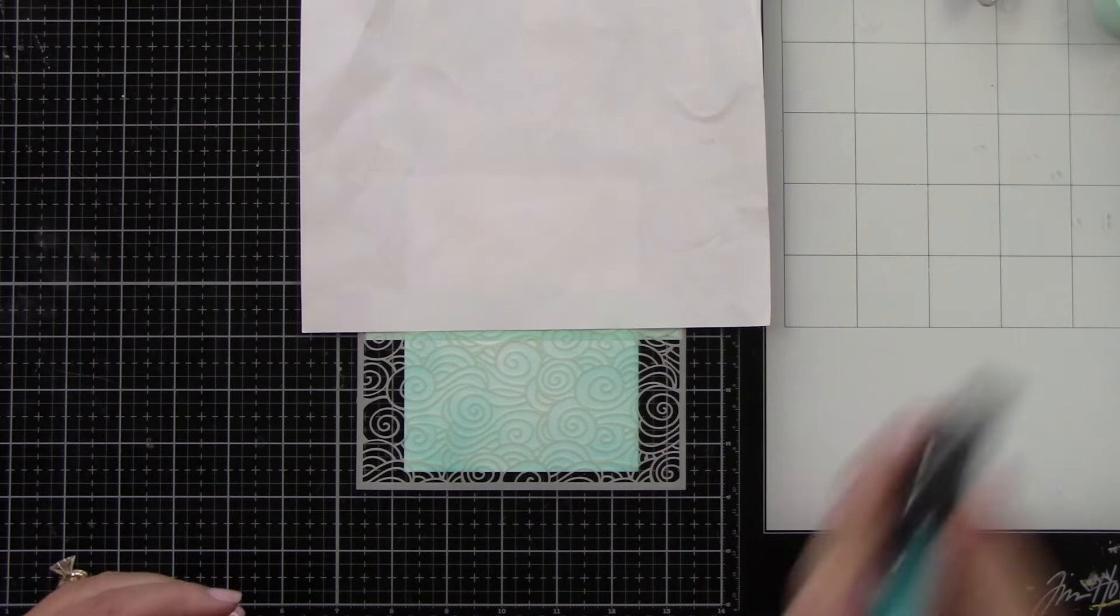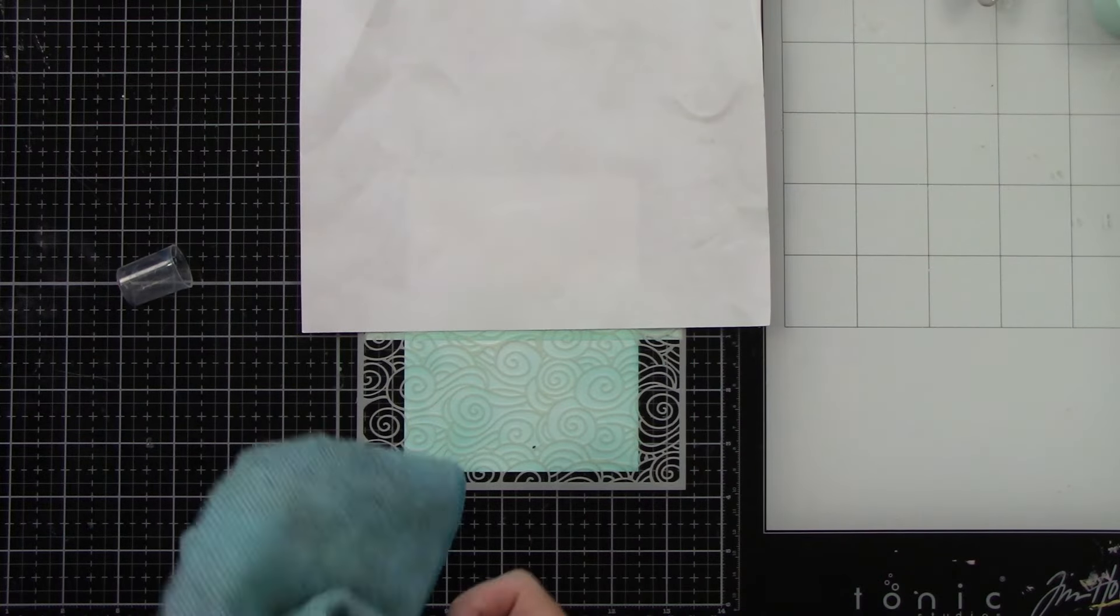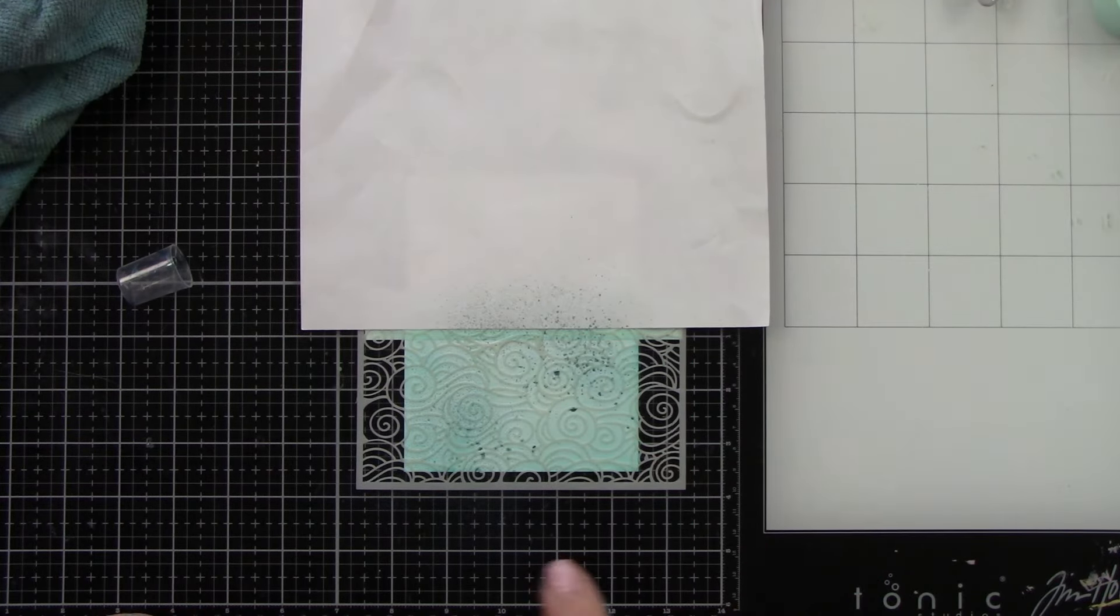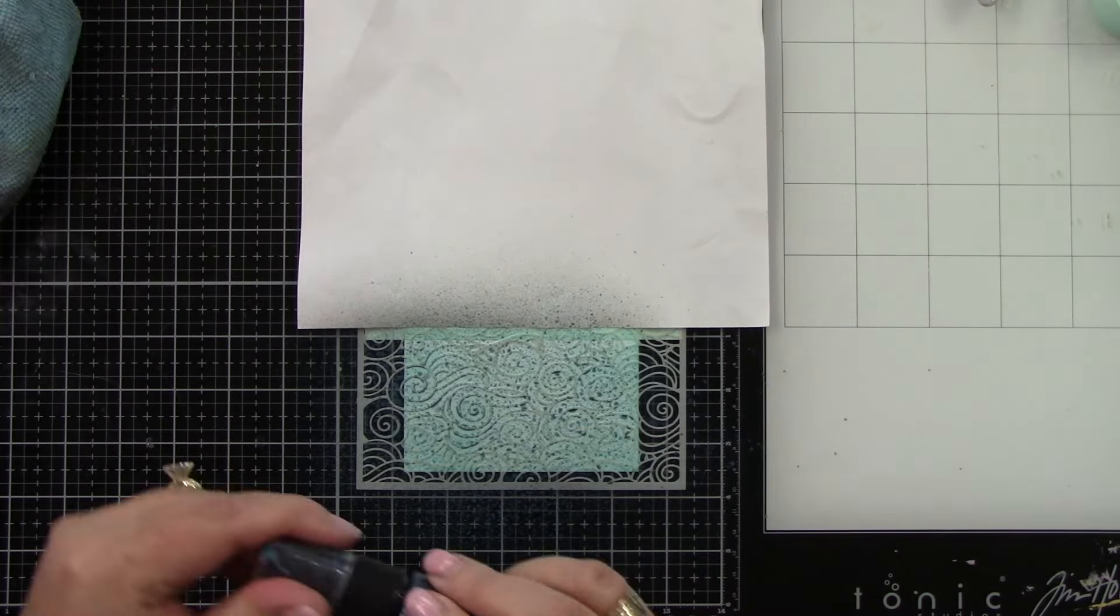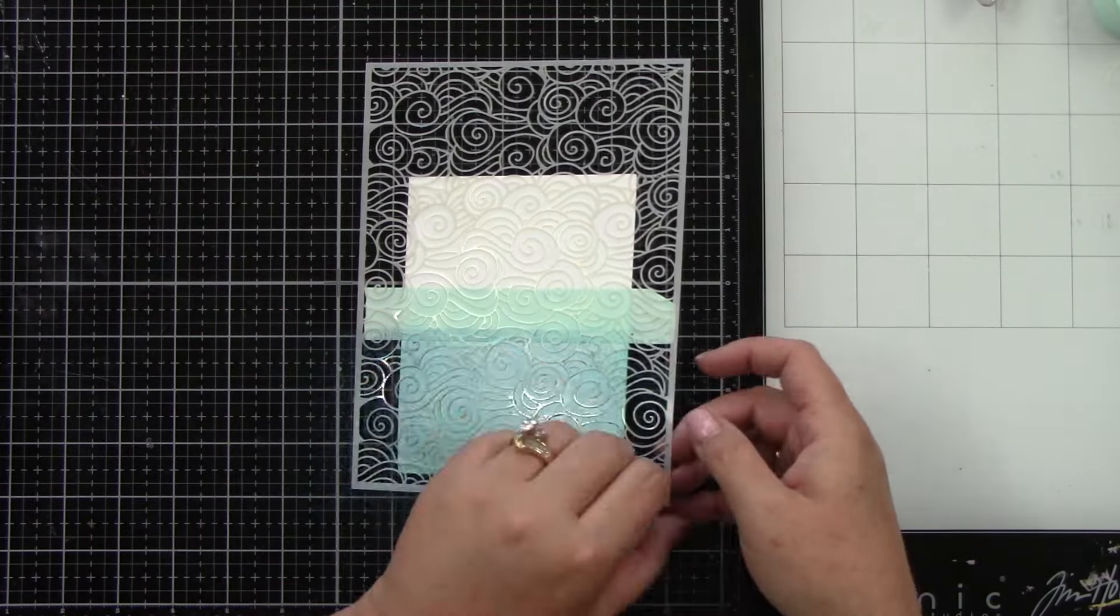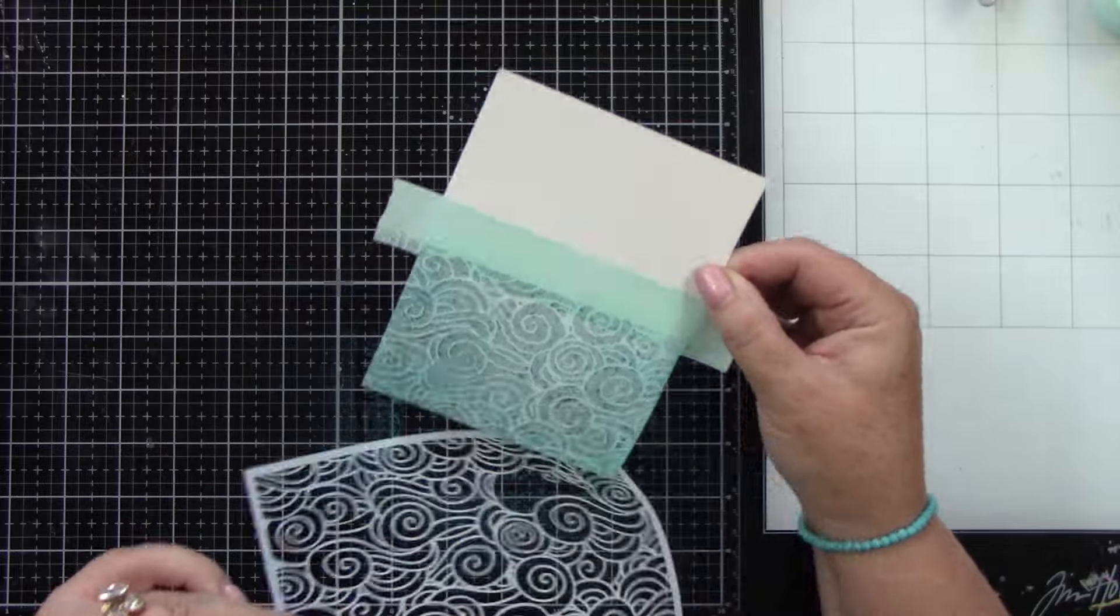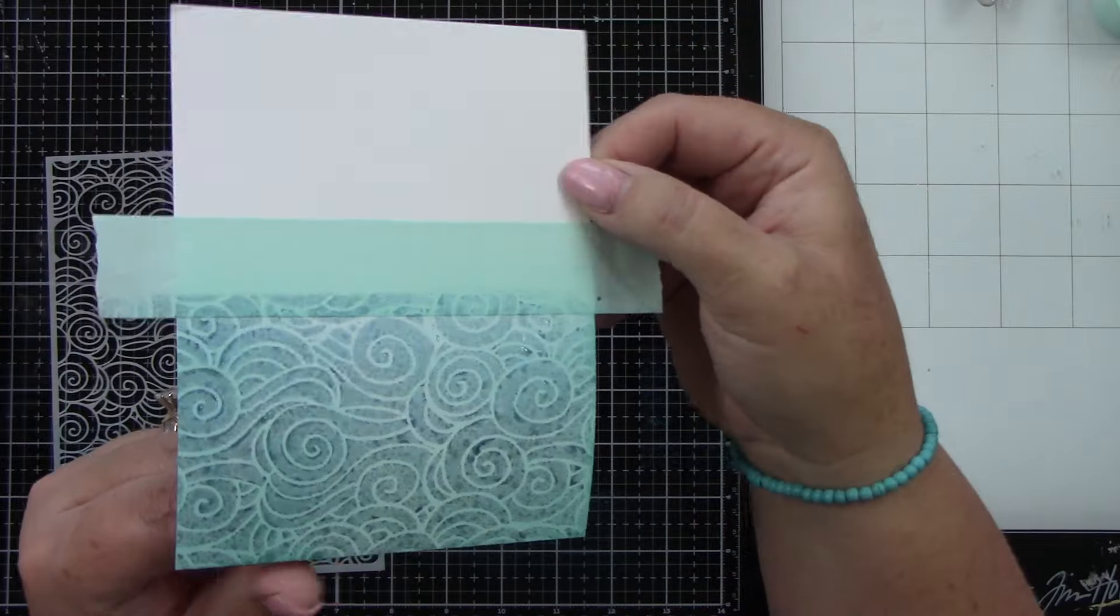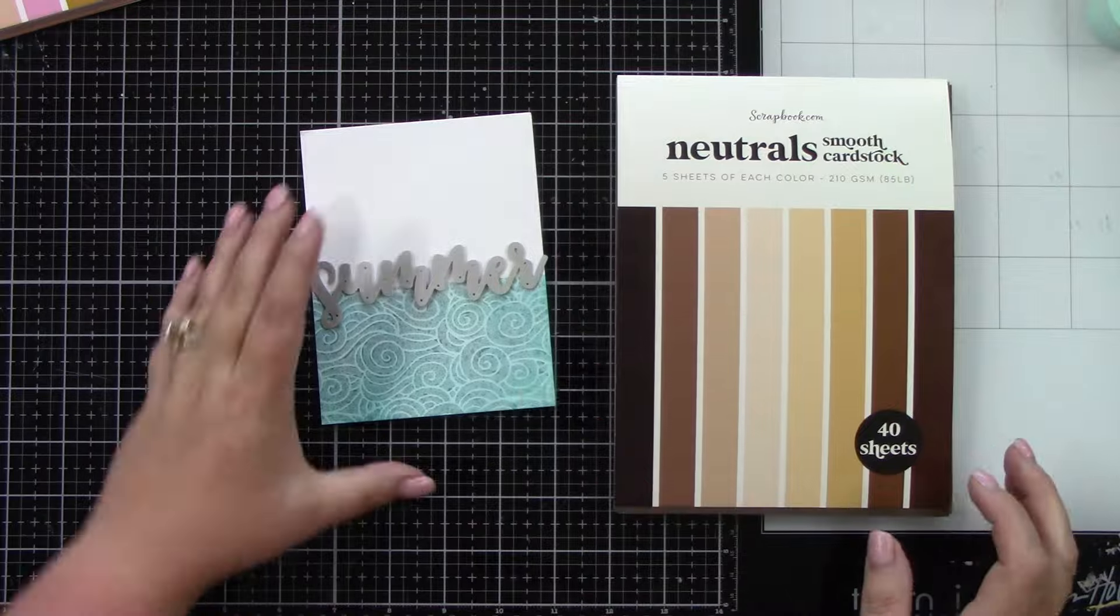I'm shaking it up really good. And then I'm going to spritz this through the stencil. So this is technique number two. Instead of ink blending again through the stencil, we're going to spritz this and this is going to give us that same look. So I'm going to dab off that extra thick spray that didn't dry as quickly because I don't want it to run under my stencil. But when we peel this back, look at that.